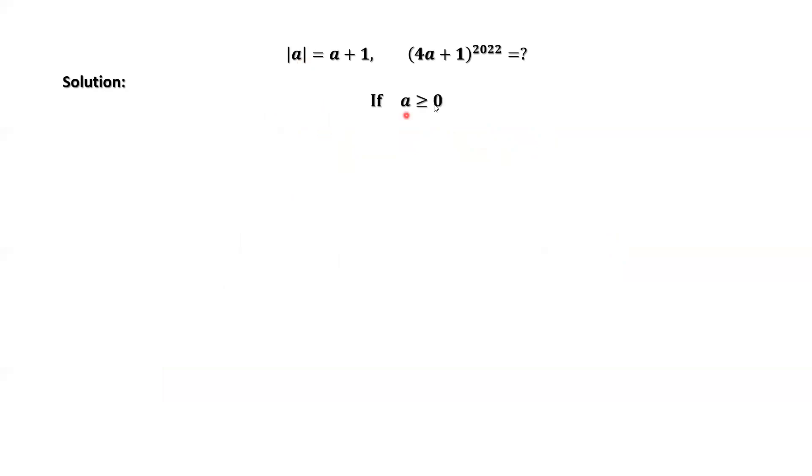If A is bigger than or equal to zero, then we have the absolute value of A equals A. Replacing absolute value of A by A from the given equation, we have A equals A plus 1. This equation has no solution.